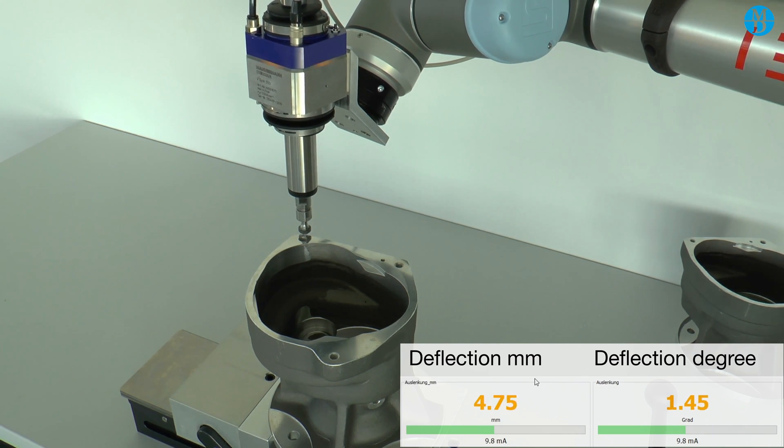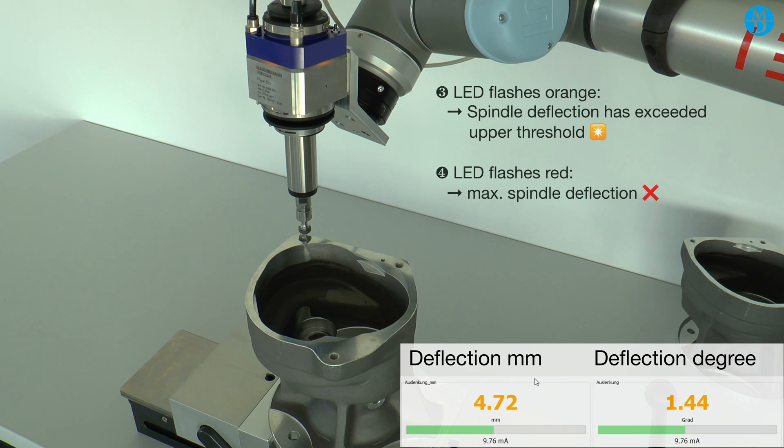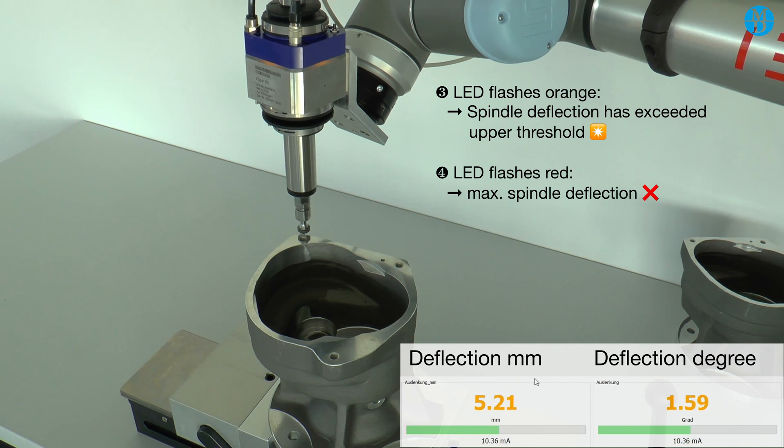When we move closer to the part, the optical indicator changes and flashes orange. This indicates a crash warning. And when we move even closer, the optical indicator changes to a solid red to indicate a crash.